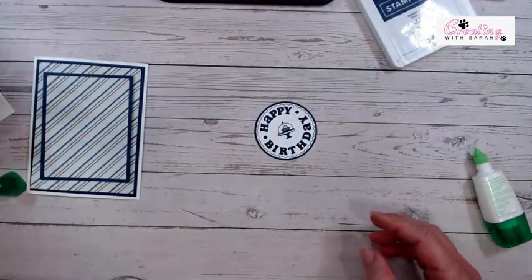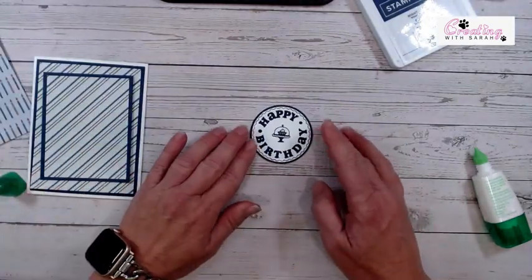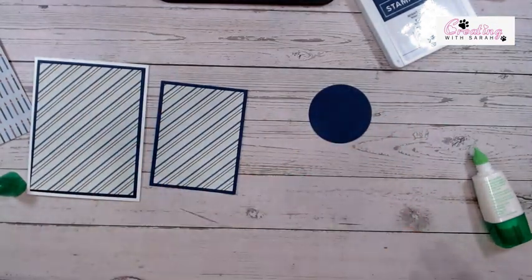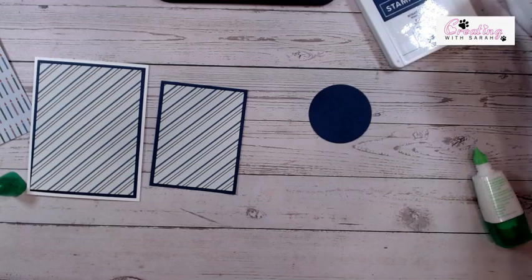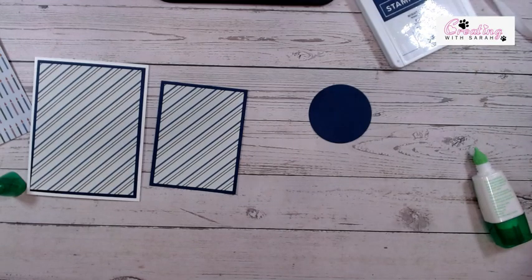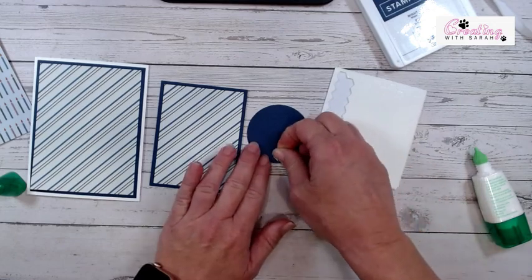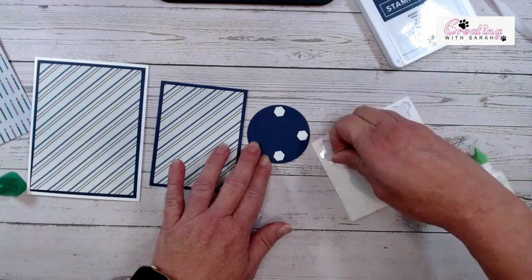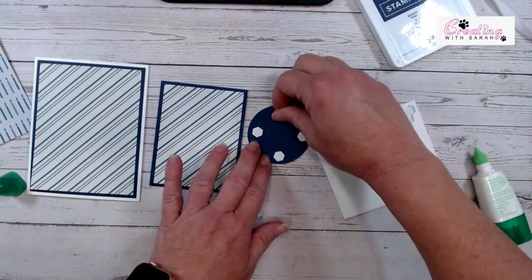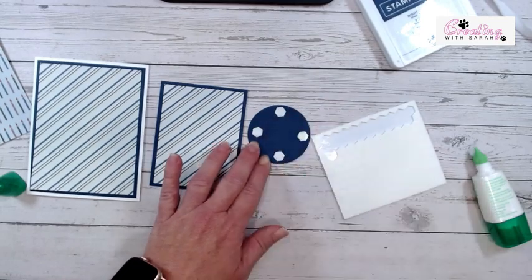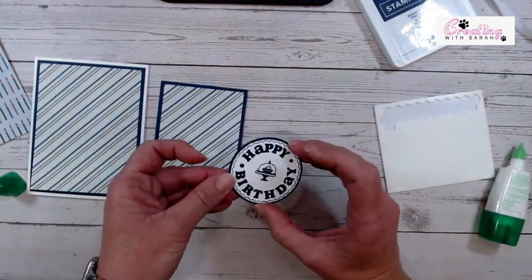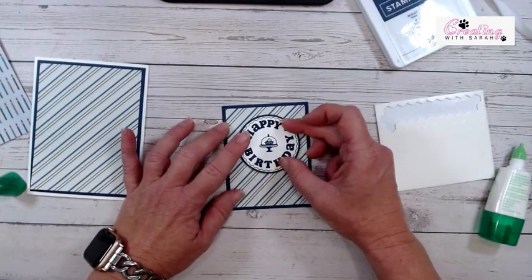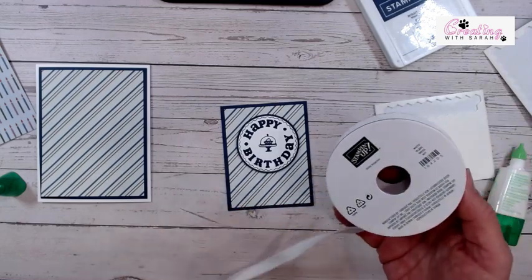Actually, I don't need to because I can use this piece, the backing. So there's that. Let's flip it over and grab some dimensionals. Those are my mini. I am going to put four dimensionals on here. I don't think we need one in the center. I think we should be okay. So make sure your happy birthday is going the right direction, and we're going to place that right on top.